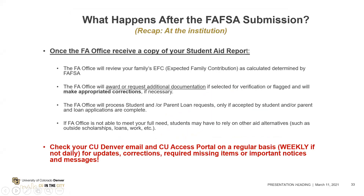What happens after the FAFSA is submitted? Once the financial aid office receives the Student Aid Report, they will look at the Expected Family Contribution, because they need it to determine the type of aid they could award to the student. If the student is not selected for verification, they will award the student. If they are flagged for verification or discrepancy, the office will request additional documentation, collect that information, submit any corrections, and reprocess the student's FAFSA.